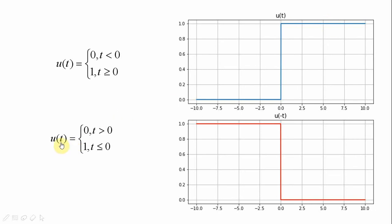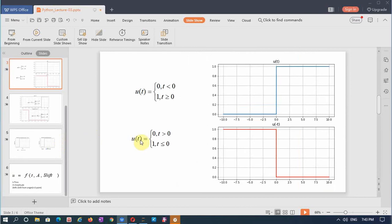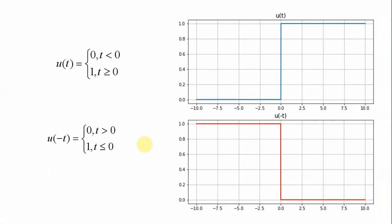A folded signal is defined as u(-t). A folded signal is given by u(-t), which is equal to 0 for t greater than 0 and it is 1 for t less than or equal to 0 — opposite of u(t). You can see the plot of the folded unit step signal: it is 1 for t less than or equal to 0 and 0 for t greater than 0.